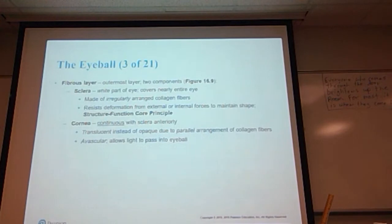The fibrous layer is the outermost layer and has two components. You have the sclera, which is the white part of the eye, covering nearly the entire eye. It is made up of irregularly arranged collagen fibers. It is very resistant; it does not change shape very well from internal or external forces. Again, the sclera fits that structure-function core principle—we've been talking about this all semester. Things are made the way they are so they can do their job, and they're able to do their job because of the way they're made.